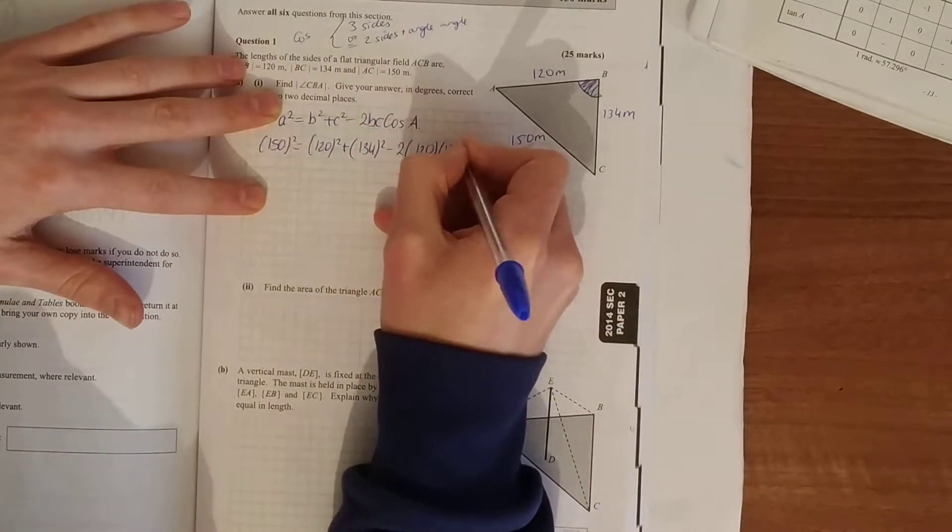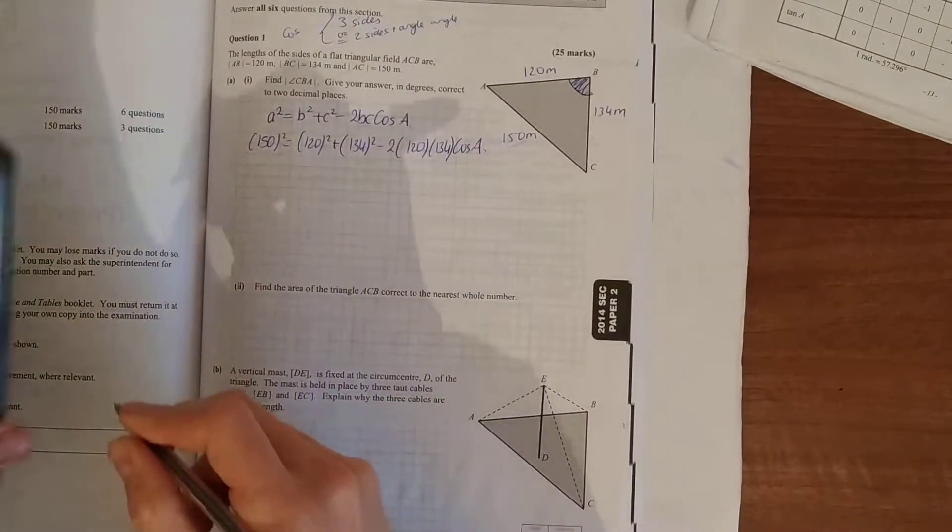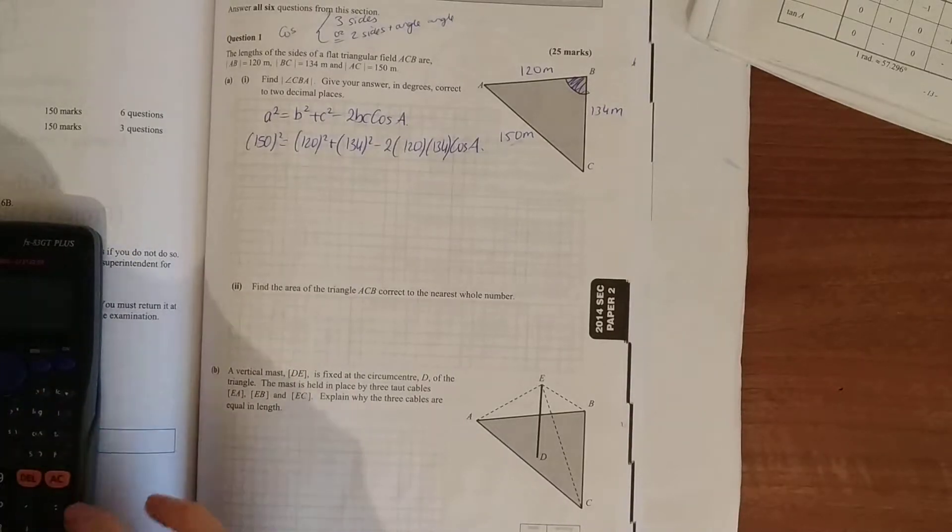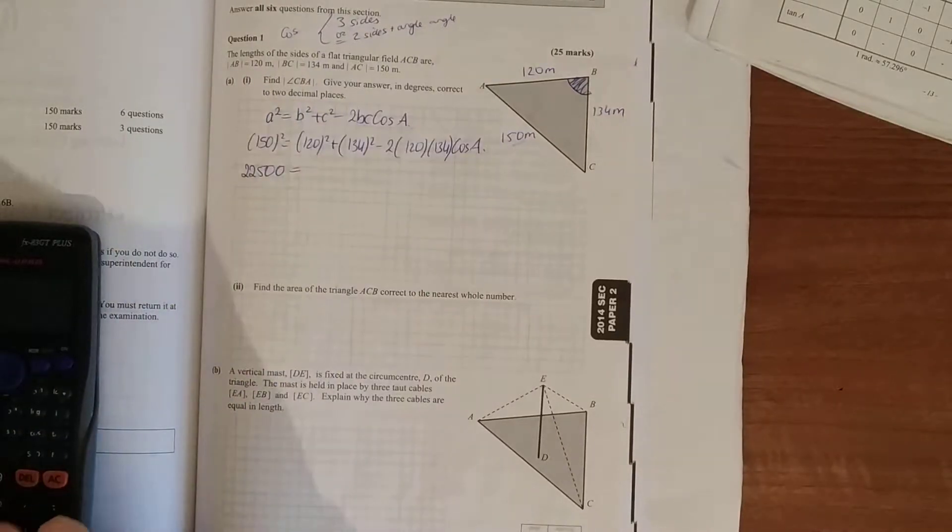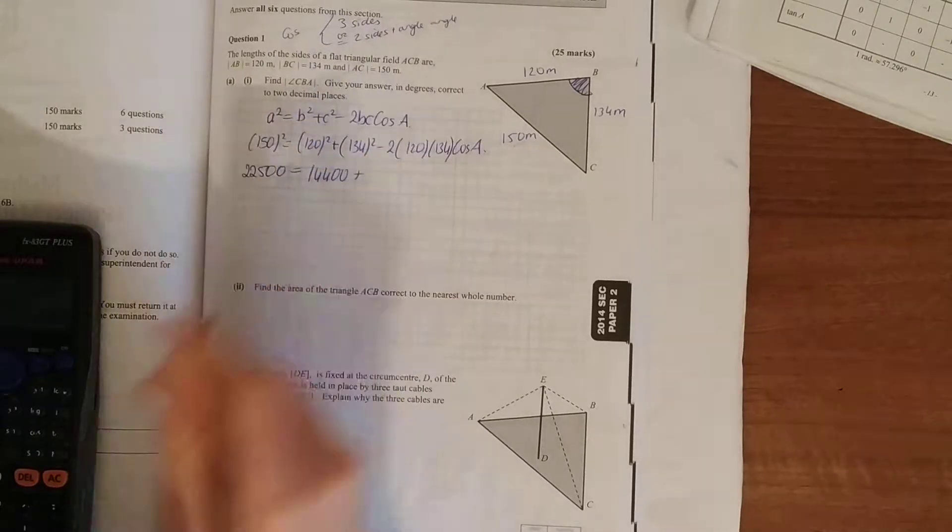Now tidy that up for yourself. So 150 squared is 22,500. 120 squared is 14,400 plus 17,956.